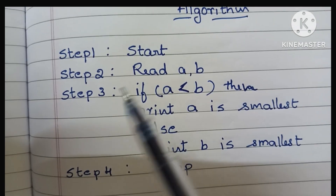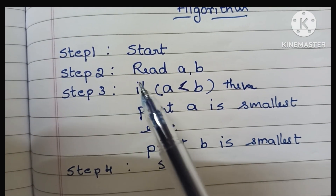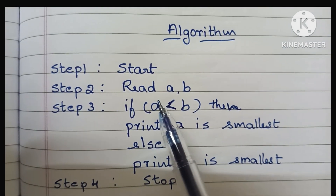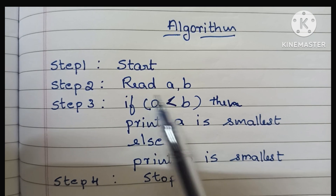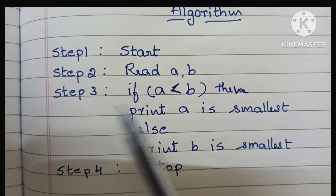So guys, this is the algorithm to find the smallest between two numbers. Step 1: start with the start statement. Step 2: we have to read two input variables, that is read a and b.